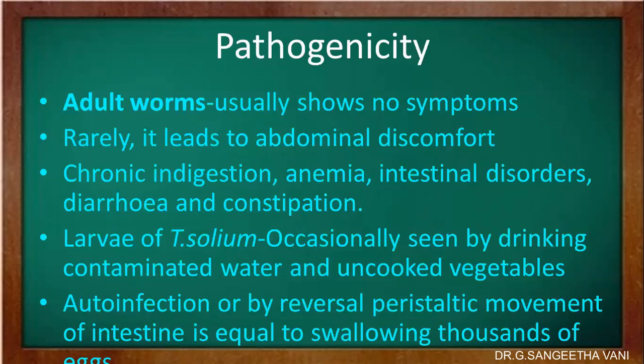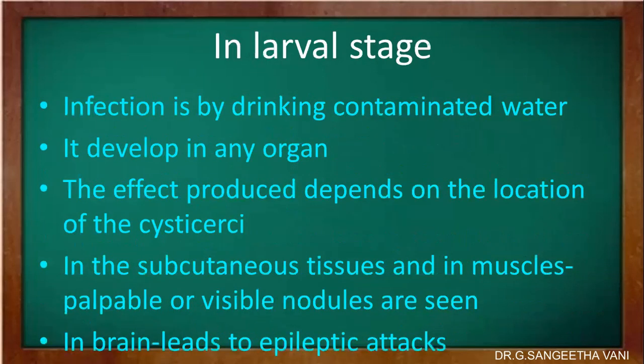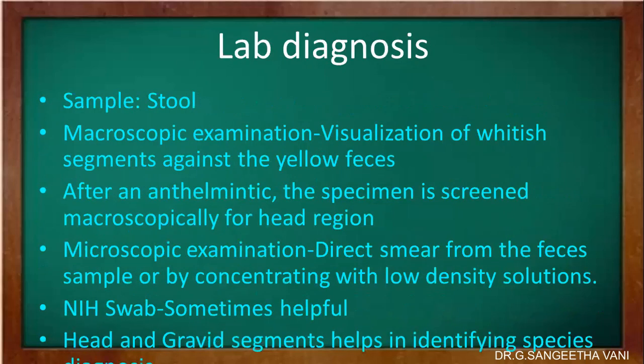In the larval stage, infection by drinking contaminated water may develop in any organ. The effect produced depends on the location where the cysticercus is situated. In subcutaneous tissues or muscles it will be seen as a palpable or visible nodule. In the brain it may lead to an epileptic attack.